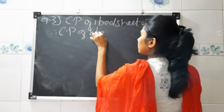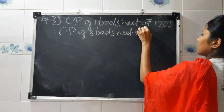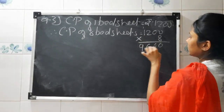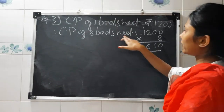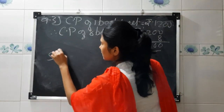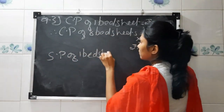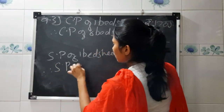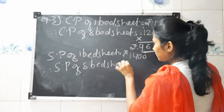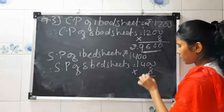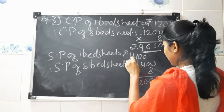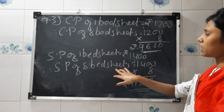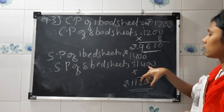Therefore, cost price of 8 bed sheets equals 1200 multiplied by 8, which gives rupees 9600. Now, selling price of one bed sheet is rupees 1400. So selling price of 8 bed sheets equals 1400 multiplied by 8, which gives rupees 11200.